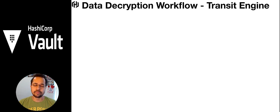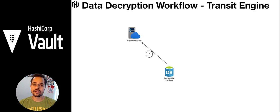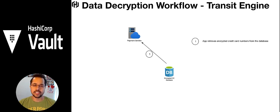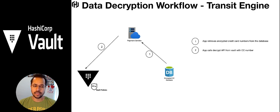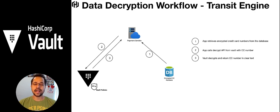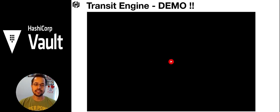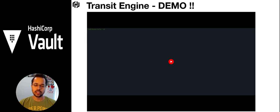Now the data is encrypted, but apps need to decrypt it as well. The decryption workflow is the reverse: the payment service requests the encrypted credit card from the database, then sends that encrypted form to Vault calling the decrypt API. Vault, based on policies, will allow or disallow that API call. If accepted, it sends back the data to the payment service in clear text decrypted format. Now we've looked at the transit engine and how it works — let's look at the demo.